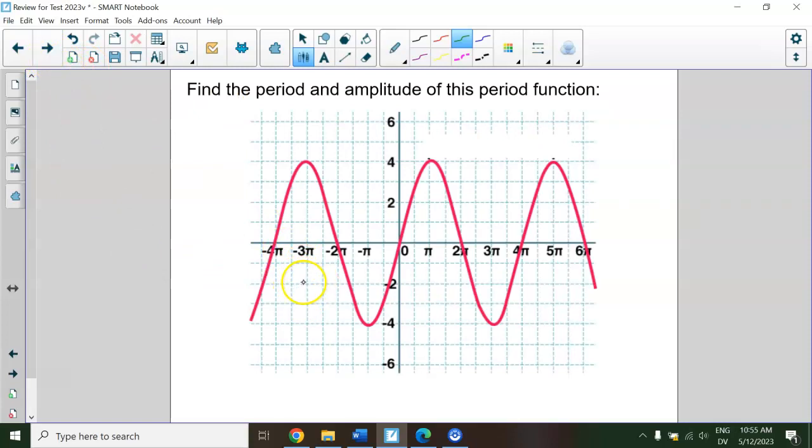Alright, period and amplitude. Pause the video and see if you remember how to do this. The period is how long for one cycle, like one repetition, how many x units does that take? You can take from the top here to the top here. We just have to say we went from π to 5π, so that is 4π long. So the period is 4π. You can also start at 0 as a good starting point and then go all the way around, and it would repeat right here. So that again is from 0 to 4π, so it's 4π.